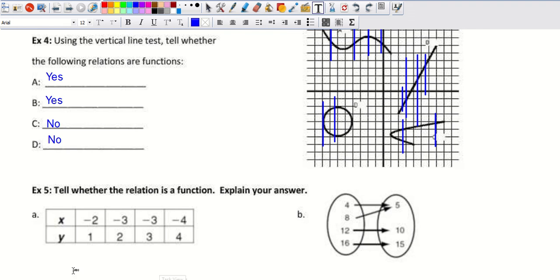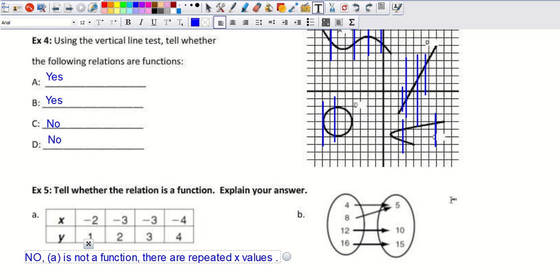And then number five, tell whether each relation is a function and explain your answer. So A is no. Not a function. There are repeated X values. And then the same thing with this one. No. So the diagram is not a function. Or we can say B. I want to say that. Write the mapping diagram. Not a function.